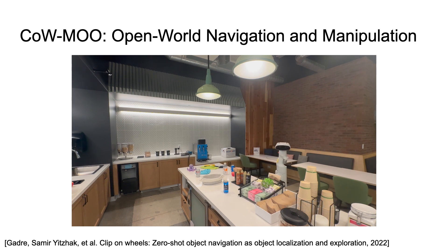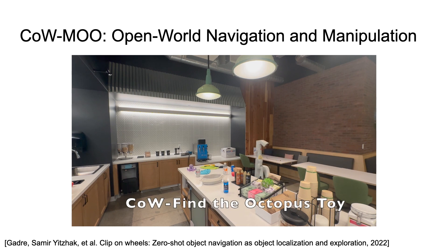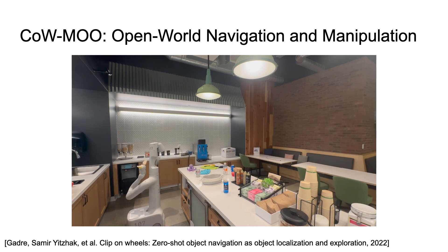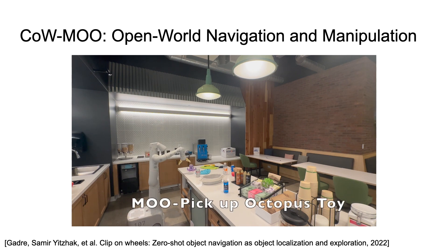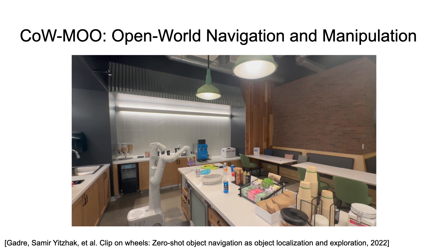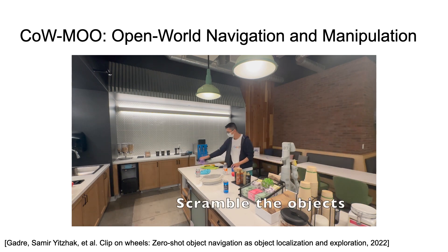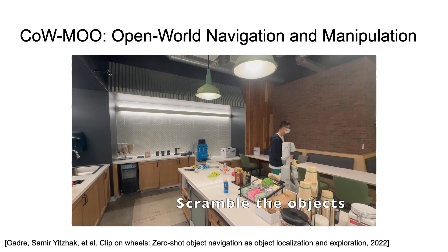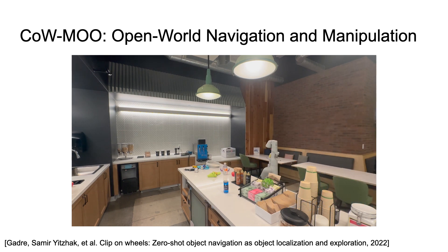Coincidentally, there is an open vocabulary object navigation algorithm called CLIP on Wheels, or COW for short. To showcase a combined open vocabulary navigation and manipulation system, we implement a variant of COW and combine it with MOO, which we present as COW-MOO. COW handles robot navigation to an object of interest, upon which MOO can then manipulate it.